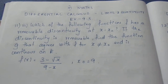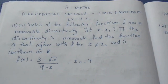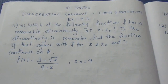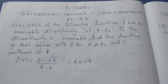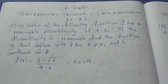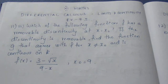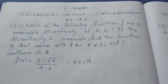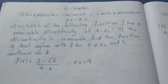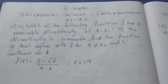Hello viewers, I am Aitli. In 11th standard differential calculus, limits and continuity, exercise 9.5, we are looking at the 3rd sum. The question asks: which of the following functions f has a removable discontinuity at x equal to x naught? If the discontinuity is removable, find the function g that agrees with f for x not equal to x naught and is continuous on R. f of x is equal to (3 minus root x) by (9 minus x), where x naught equals 9.